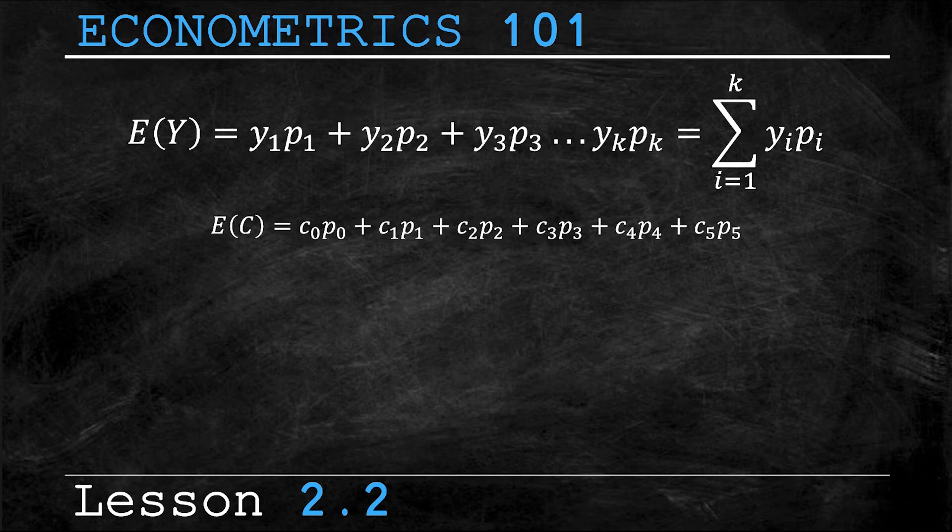plus c₁, the outcome of 1 crash, times p₁, the associated probability of 1 crash, and so on and so forth for all six possible outcomes of 0, 1, 2, 3, 4, and 5 crashes.